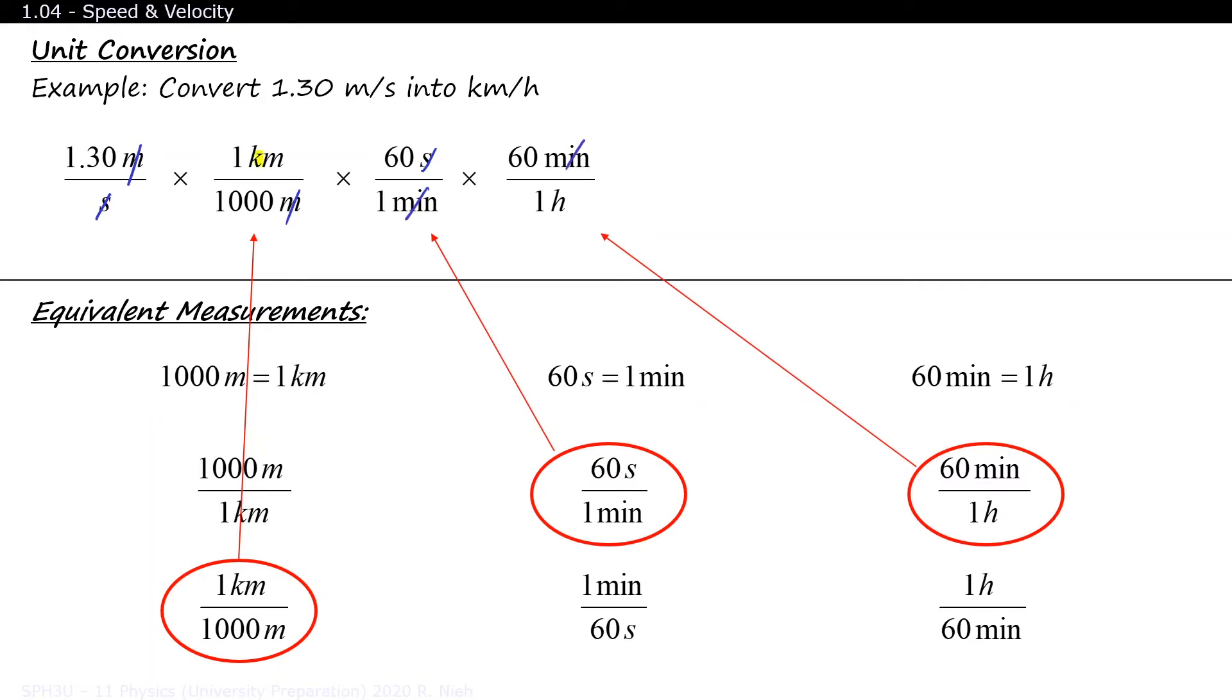When we multiply 1.3 by 1 by 60 and by 60, we get 4,680. And when we multiply 1 by 1,000 by 1 by 1, we get 1,000. 4,680 divided by 1,000 gives us 4.68. And kilometers divided by hours gives us kilometers per hour.